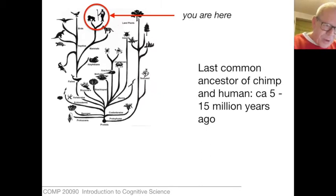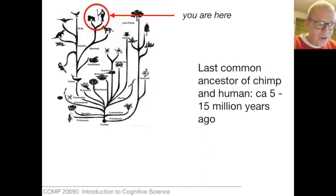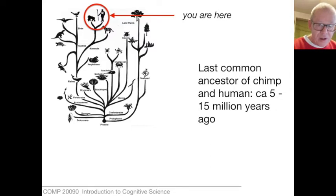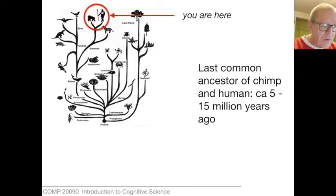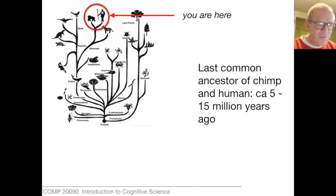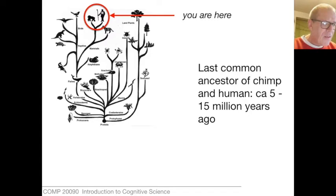Where are we on the tree of life? We're out in a very particular neighborhood. We are continuous with all life forms, but particularly closely related as a species to the great apes. The last common ancestor of the chimpanzee and the human is pegged at 5 to 15 million years ago — though it's more commonly understood as 5 to 6 million years ago.